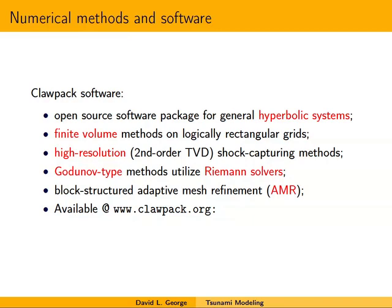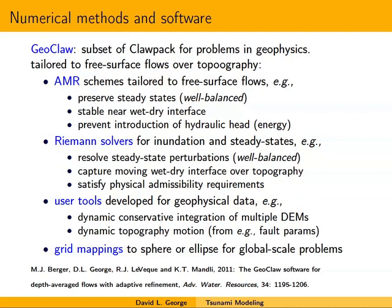ClawPack is the more general open source package for hyperbolic problems, using high-resolution finite volume methods that are second-order for smooth solutions but shock-capturing — meaning total variation diminishing to eliminate spurious extrema around shocks. These are Riemann-solver-based methods with AMR. GeoClaw is the subset of ClawPack specialized for geophysical free surface flows including tsunamis.